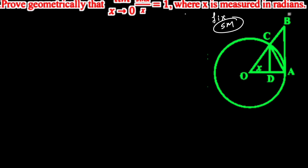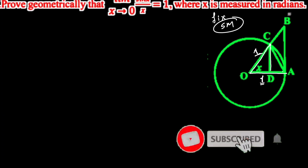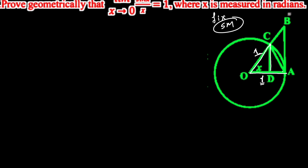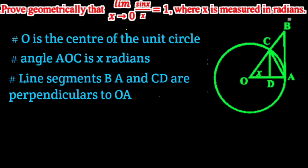Let's draw a unit circle. We have points O, A, and C. O is the center of the unit circle. If you want to draw a radius, you can draw the unit circle with distances between the three points. Consider the unit circle.